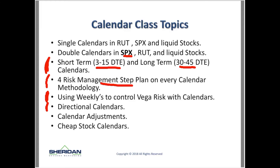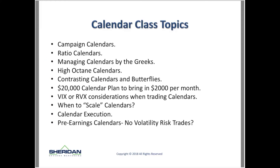We'll talk quite a bit about calendar adjustments and which ones to use in certain market conditions. How about cheap stock calendars? A cheap calendar might be 30 to 75 cents. How do you trade those? Obviously if you trade SPX or RUT they're not cheap, so how do we trade these cheaper ones and are they any good?